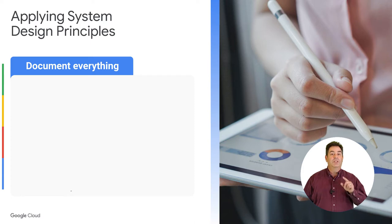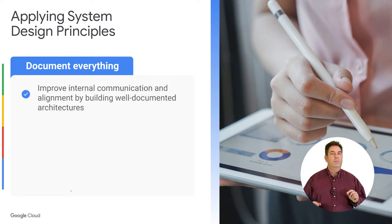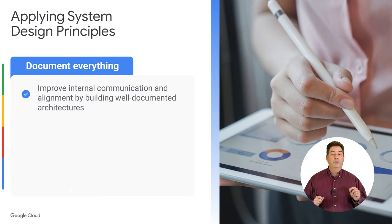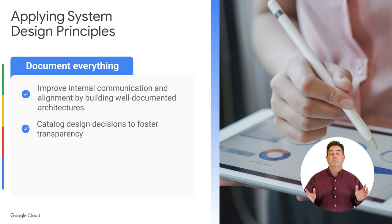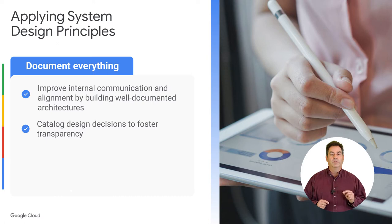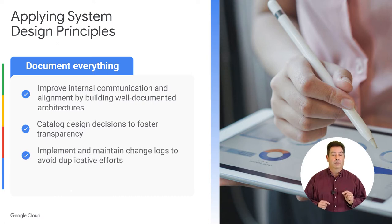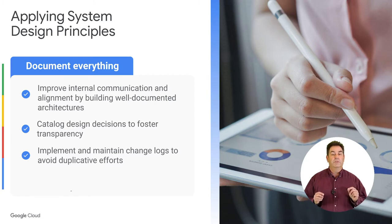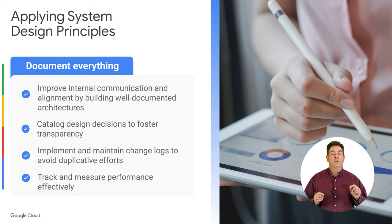First, document everything. Properly documented system architectures help establish a common language and enable your cross-functional teams to collaborate effectively. By documenting design strategies and decisions in a change log, teams have the context needed to align their initiatives, avoid duplication, and measure performance changes effectively.